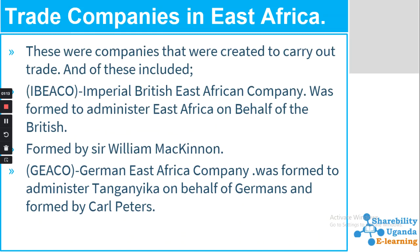We shall look at the trade companies in East Africa. These were companies created to carry out trade. The first was IBEACO — the Imperial British East Africa Company — formed to administer East Africa on behalf of the British, formed by Sir William McKinnon. The second was GEACO — the German East Africa Company — formed to administer Tanganyika on behalf of the Germans, formed by Carl Peters.